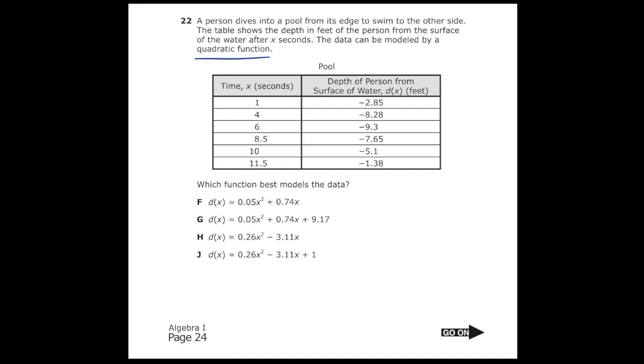So there's a number of ways you could do this problem. This is just going to be one way you could do it. What we're going to do is we're going to take each X value, for example 1, 4, and 6, and we're going to plug those in every time we see X in an answer choice. So for example, for letter F, we're going to do 0.05 and then replace the X with a 1 and square that, then add 0.74 times 1 and see what we get. We should be getting negative 2.85 if that's the correct answer. So once I put that into my calculator, I'm going to see that I get 0.79. So letter F is not correct.